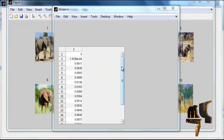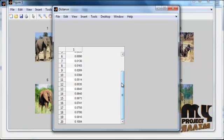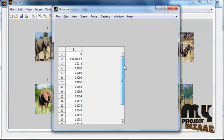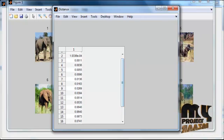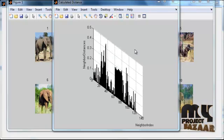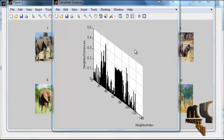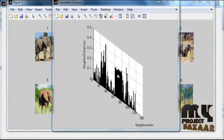The distance calculation is shown in the table. The distance of each image is shown in the table. Then the neighborhood distance is plotted in graph format. This is represented in the 3D form.